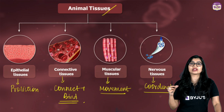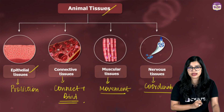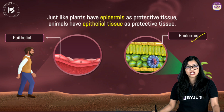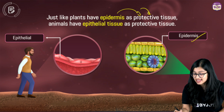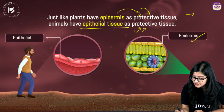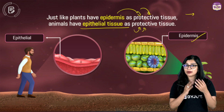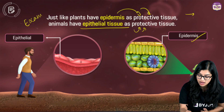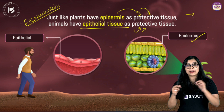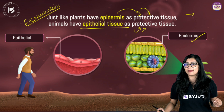Today we explore epithelial tissues. Just as the epidermis serves as a protective tissue in plants, the epithelial tissue serves as a protective tissue in animals. This comparison — where each tissue is found and in which organism — is a very important exam point, so please star-mark it.